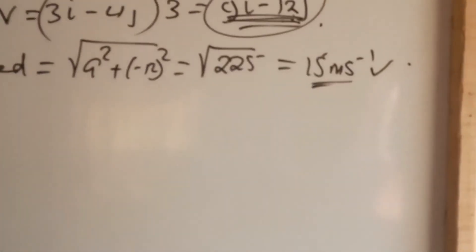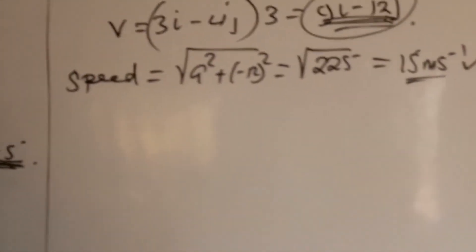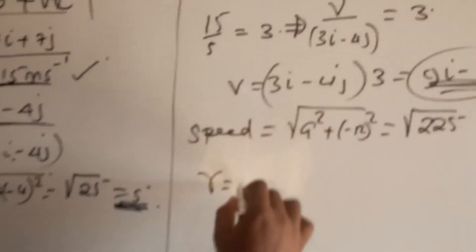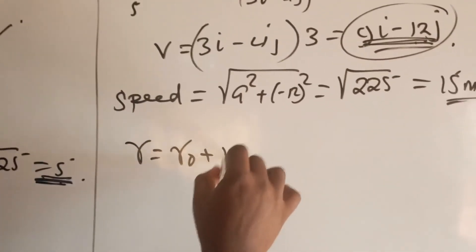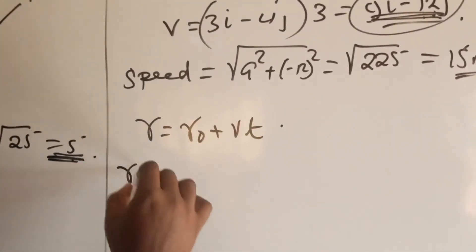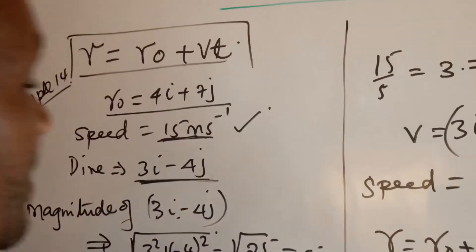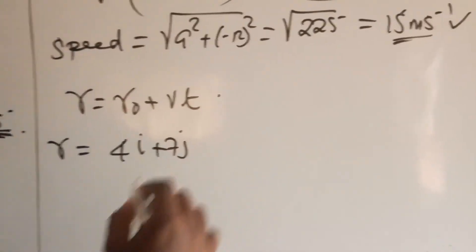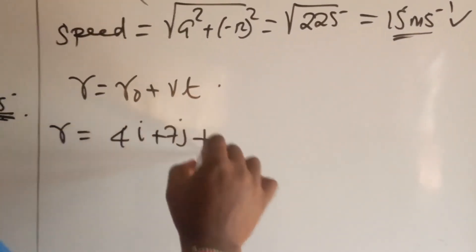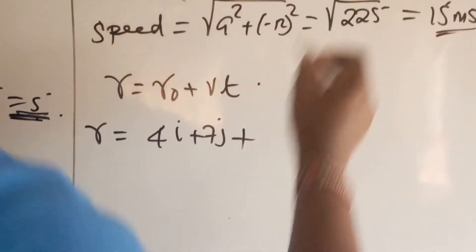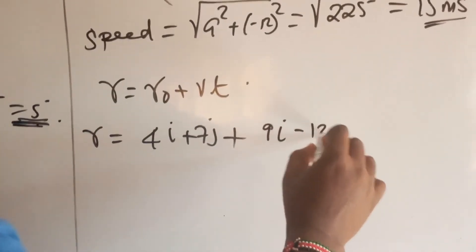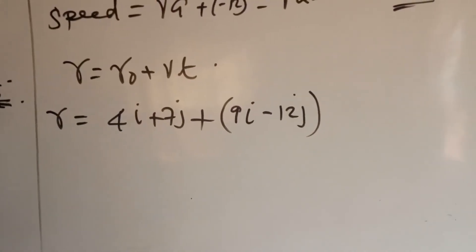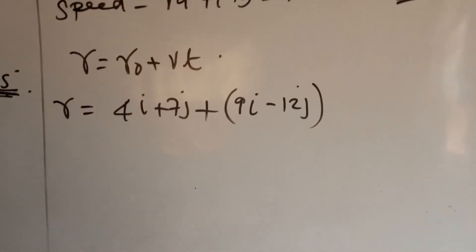That is confirmed. Therefore, we need to use now this formula: the position vector r is equal to r0 plus vt. And r is going to be r0 is 4i plus 7j plus the vector which we have now realized, 9i minus 12j multiplied by the time.